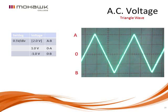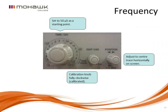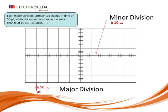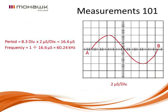For horizontal frequency measurements, set the selector switch to 50 microseconds per division as a good starting point, and make sure the calibration knob is fully clockwise — it's fairly fragile, so be gentle. If it's not fully clockwise, the numbers on the display will not be correct. Each major division is subdivided into five minor divisions, allowing much more precise and finer measurements.